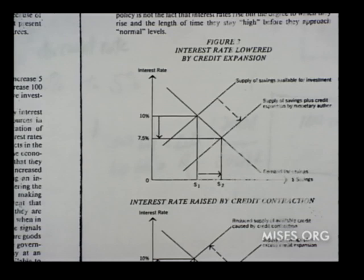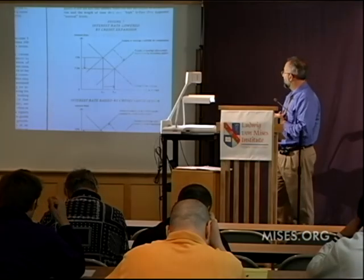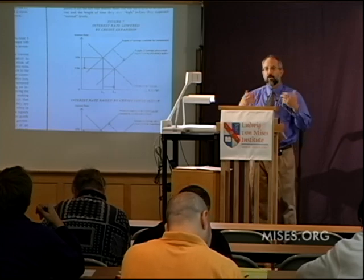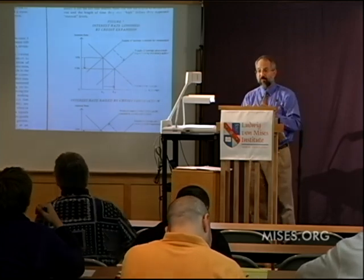Suddenly, businessmen and entrepreneurs see opportunities for profit. They see they can get a 9% or 8% return on a particular investment project, which wasn't worthwhile before when the borrowing rate was 10%. Now if they can borrow at 7.5%, they begin to borrow more money and invest it. That money is invested in purchasing new capital goods. The capital goods industry suddenly experiences a big boom. More factories are constructed, the construction industry is stimulated, oil drilling is stimulated, shipbuilding is stimulated, the electric power generating industry is stimulated. You begin to get an increase in the amount of capital goods.